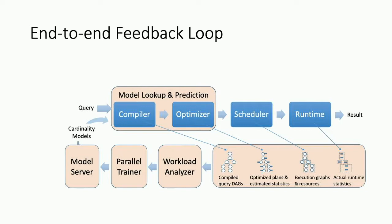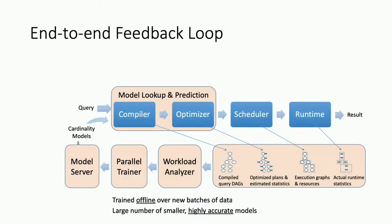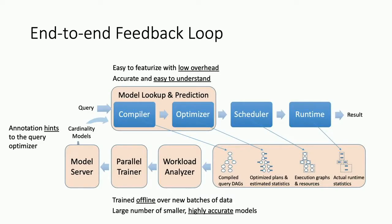For the end-to-end feedback loop: our Scope engine has compiler, optimizer, scheduler, and runtime. We take all the logs, train them offline periodically, and end up with a large number of very small models that are super accurate. We feed these to a feedback service that provides them as hints to future queries — queries can choose to use or ignore them. The optimizer uses the models to featurize, and because they're small, scoring overhead is low. If a query fails and someone needs to debug, they can understand the weights because these are simple linear models.